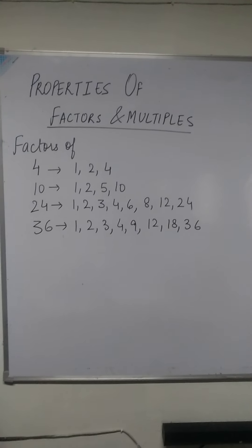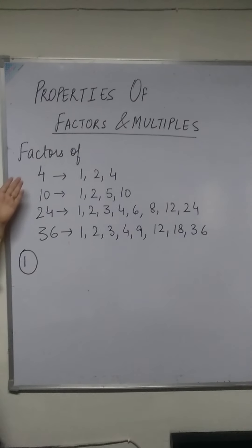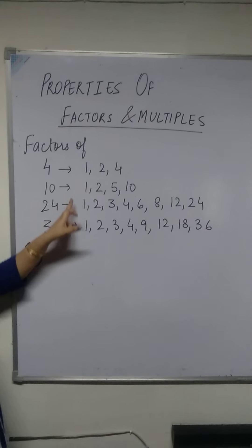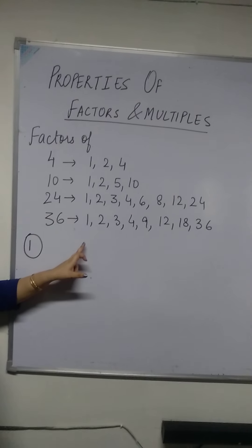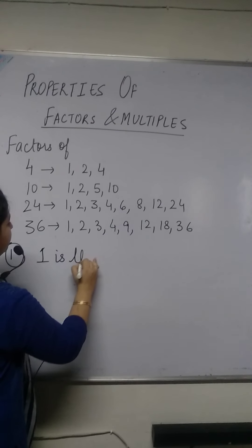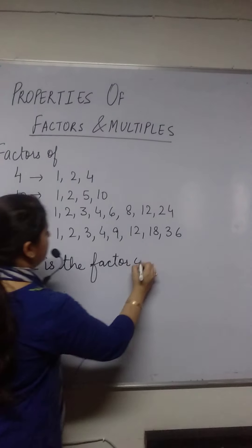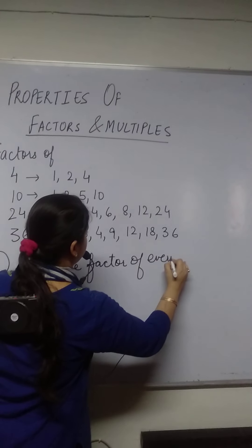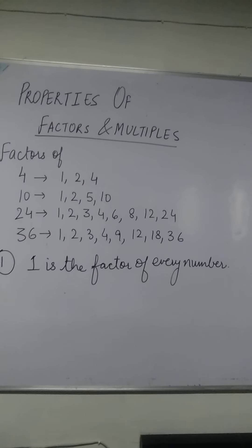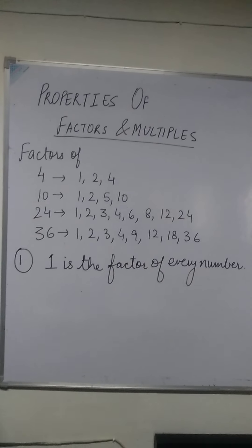The very first property that we are going to discuss is, if you look for all the factors of these numbers, one is there in each of the numbers. So we can say, one is the factor of every number. Because we see, one is appearing in the factors of all these numbers.